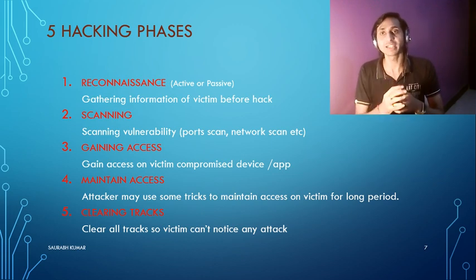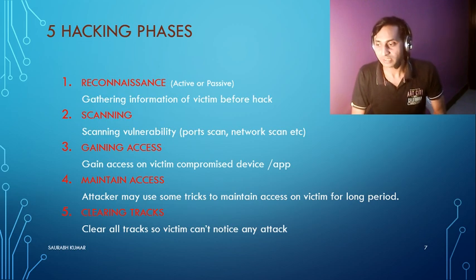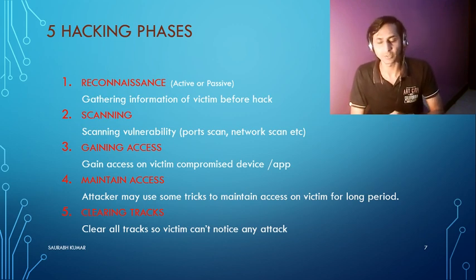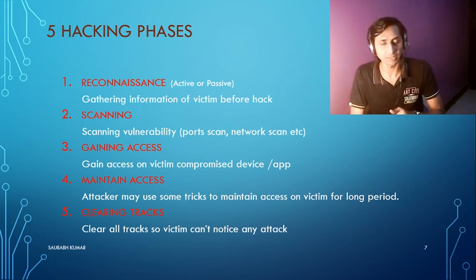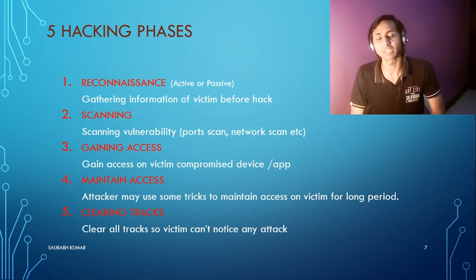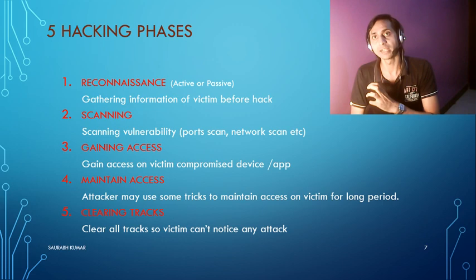Active reconnaissance can be like a phone call. You call someone and tell them you are from their bank and ask for their debit card number and expiry date. If the victim provides that information, you have gathered information about them — that is an example of active reconnaissance, where the attacker directly interacts with the victim to gather information.